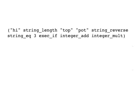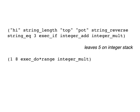Here's an example involving multiple types, with string length producing an integer from a string, string reverse producing a string from a string, and then string eq taking two strings and producing a boolean, which is then used by execif to determine which of two integer instructions to apply to the top two integers, leaving a result of five. And finally, here we see an iterative calculation of the factorial of eight using the exec do star range instruction to execute integer mult in the body of a loop eight times on a running product and the loop index, producing a result of 40,320, which is the factorial of eight.